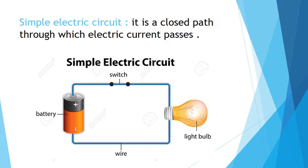A switch. In this picture you are seeing the switch is closed, so this path is closed. This circuit is closed — all the parts of the circuit are connected together. There is nothing opened, nothing broken. So a simple electric circuit means a closed path through which electric current passes. Electric current means electricity. Let's define simple electric circuit: it's a closed path through which electric current passes.